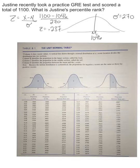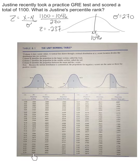Looking at the unit normal table, 0.237 is closer to 0.24, so we go with that. At Z = 0.24, the proportion in the body is 0.5948 and the proportion in the tail is 0.4052. We already have Z and need to decide which column to use.